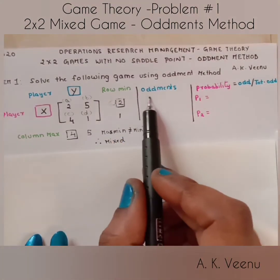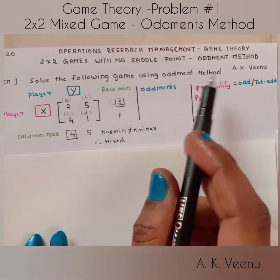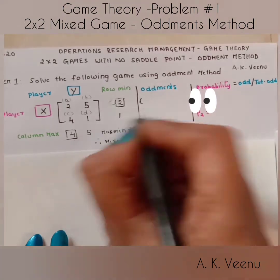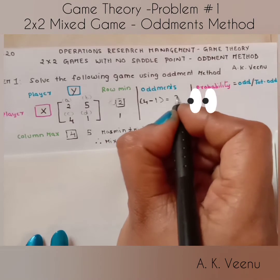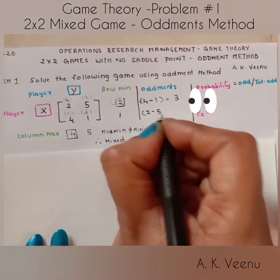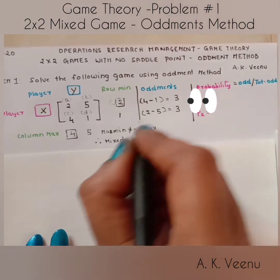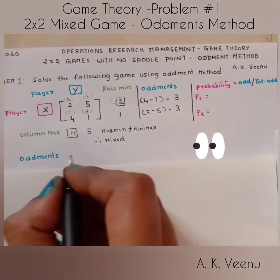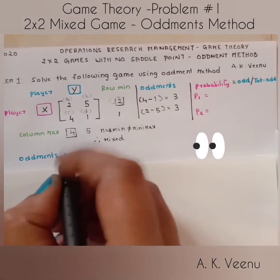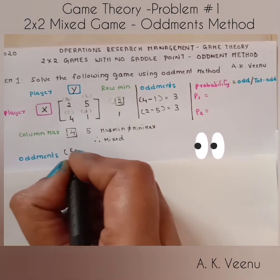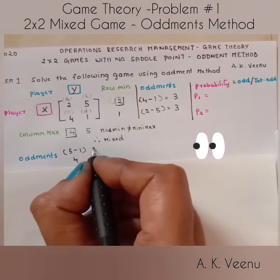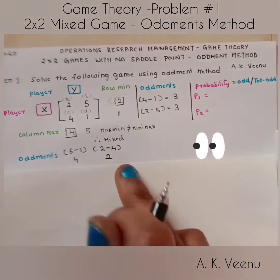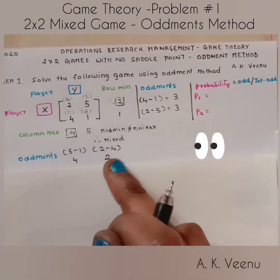The next step is to find the oddments. The formula is to subtract the elements of the second row: 4 minus 1 equals 3, and 2 minus 5 equals 3 — ignore the sign. For player Y, subtract the elements of the second column: 5 minus 1 equals 4, and for the first column: 2 minus 4 equals 2 — again ignore the sign.